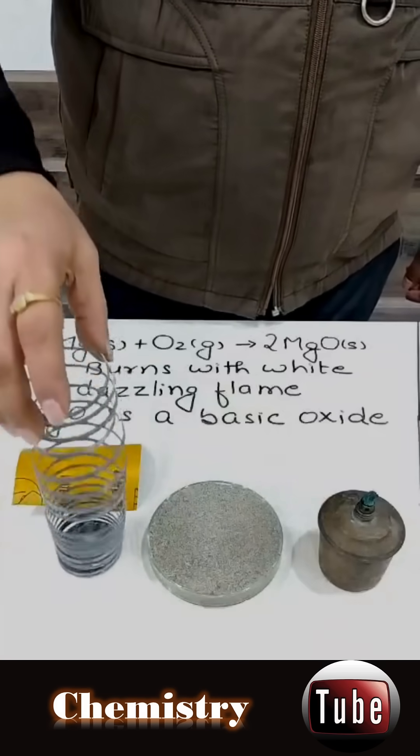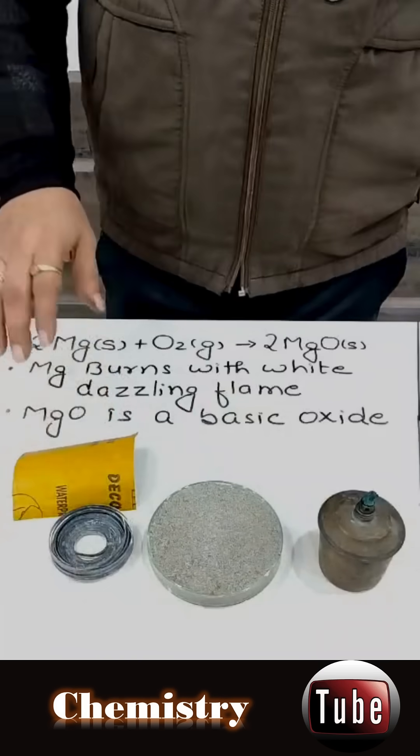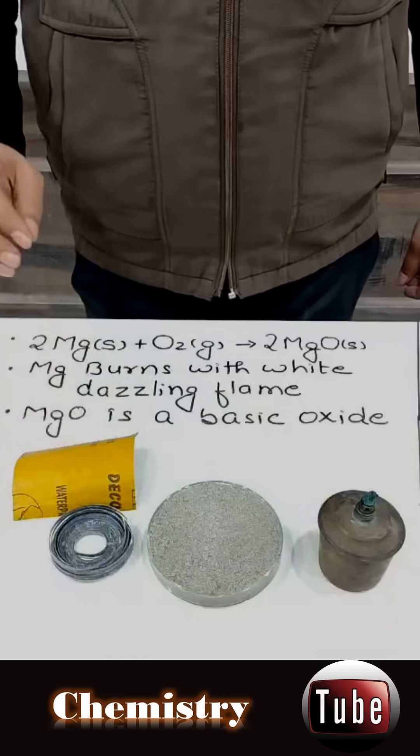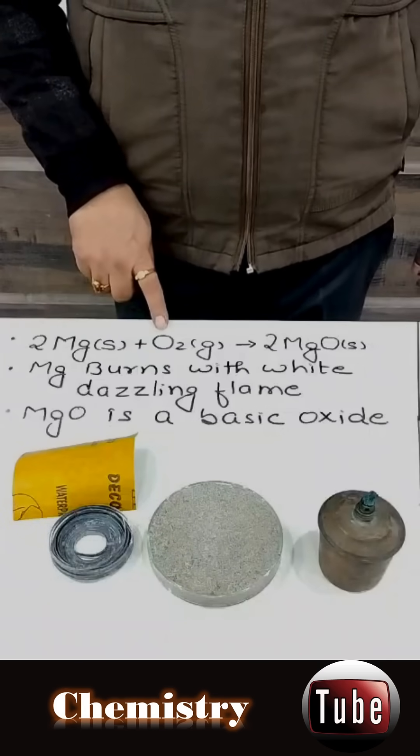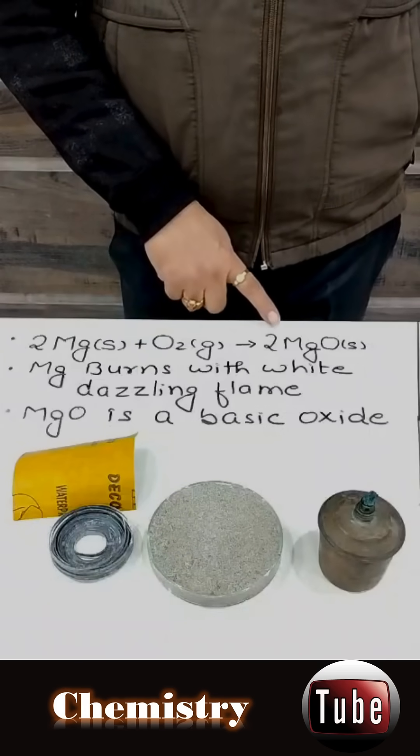This is magnesium ribbon. It is a metal. We will try to burn this metal and when magnesium metal burns in presence of air or oxygen, it will produce magnesium oxide.